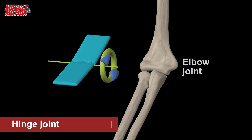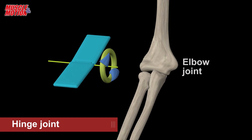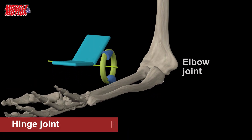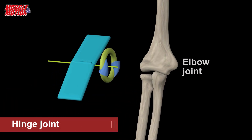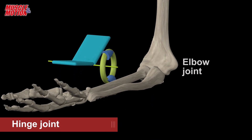Hinge. Permits movement in one plane, usually flexion and extension. For example, the elbow joint and knee joint.